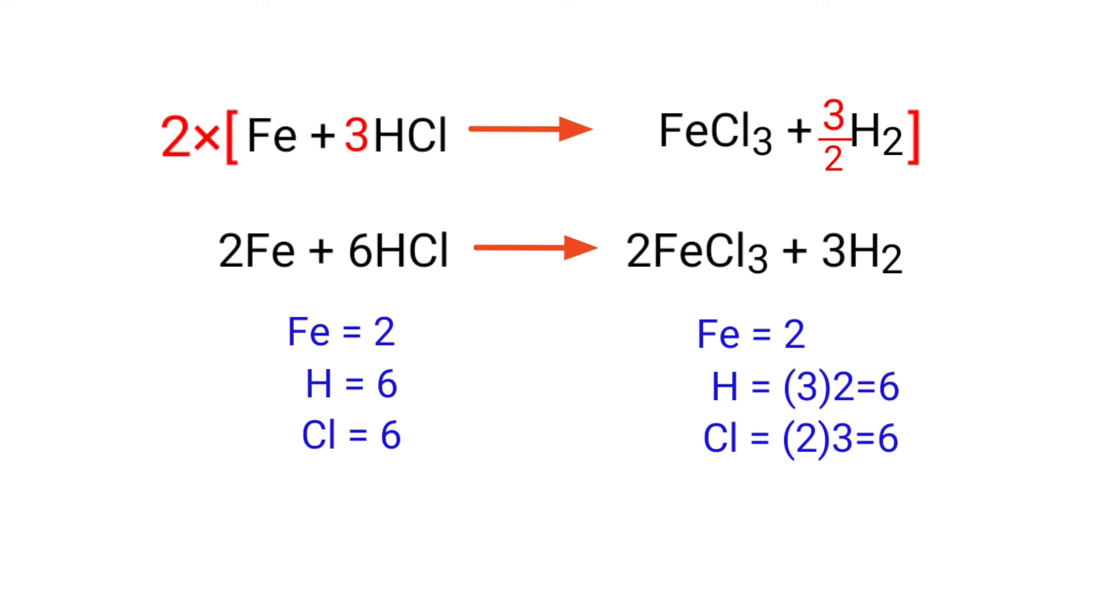The equation is now balanced. There are two iron atoms, six hydrogen atoms, and six chlorine atoms on both sides.